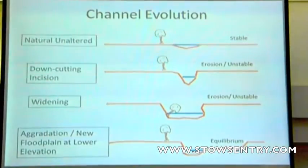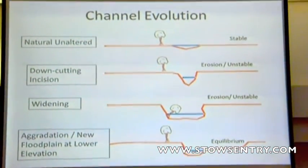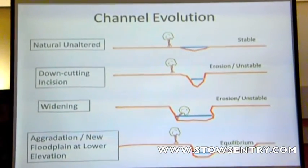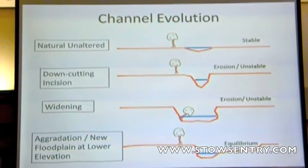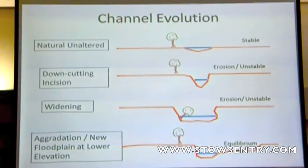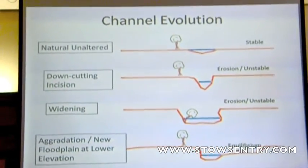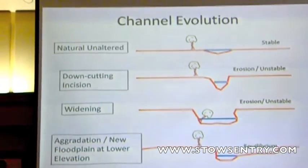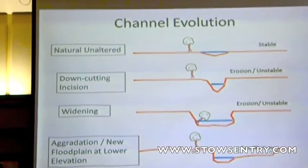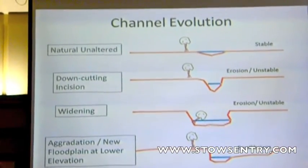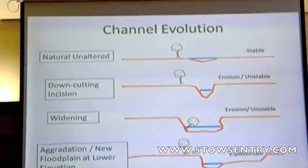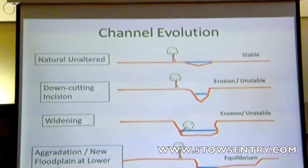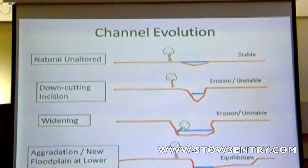I just want to talk a little bit about channel evolution. If you look at that top line — that natural, unaltered state before we were ever resident here — most of our streams were much more attached to their floodplains than a wide area of the flood. When we start building impervious surfaces, enforcing storm lines, straightening the stream, bringing all the runoff down from other areas, what it does is start the channel evolution process.